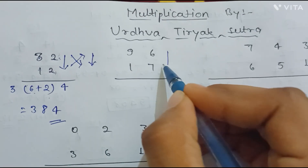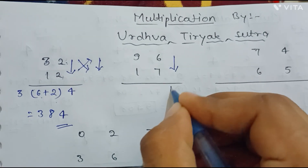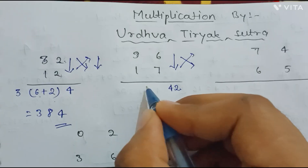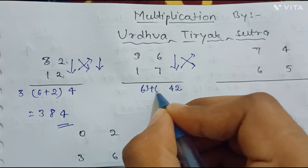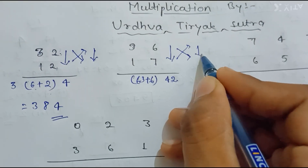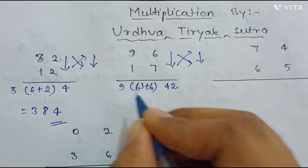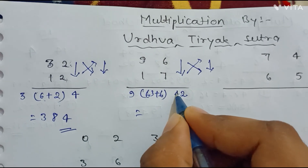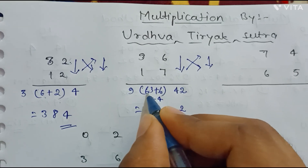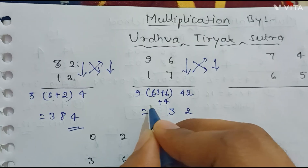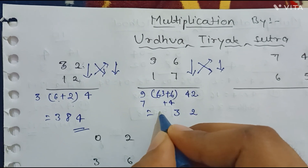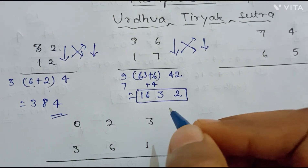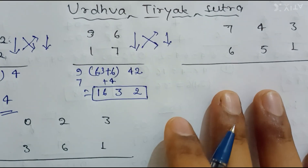Let us understand again with another example. The first step was to multiply vertically: 7×6=42. The second step was to do the crisscross multiplication: 9×6=54 plus 6×1=6. The final step was to multiply 9×9 vertically. Writing the final answer: we write 2, then 54+10=64, write 4 and carry 6, then 16, so our answer is 1632.